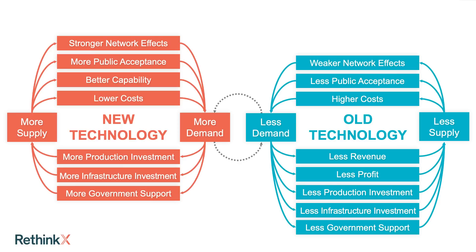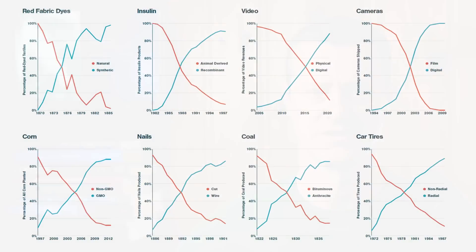At the same time the new technology is growing, it's stealing demand away from older technologies. So the older technologies experience a mirror version of all of those feedback loops. Less demand means less revenue, narrower margins, less profit, less support from public and governments, less investment, shrinking supply, higher costs. This vicious cycle sends disrupted industries into a death spiral. Together, the growth of the new and the collapse of the old make what we call a disruption X curve — or, as we say at RethinkX, X marks disruption.